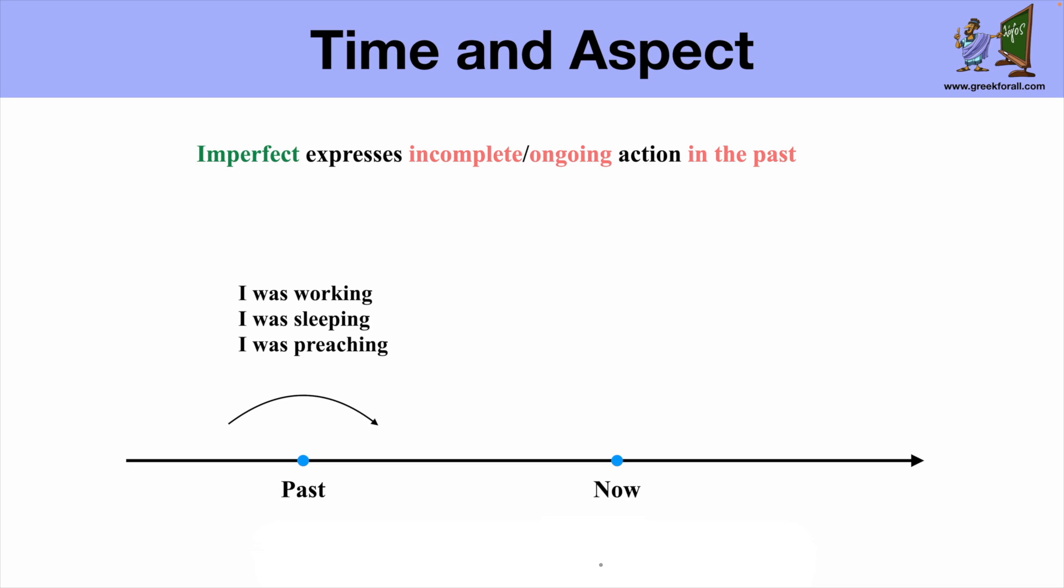So let's talk about the imperfect tense and what it means. The imperfect expresses the incomplete or ongoing action in the past. For example, if this is our reference point, so this is now...